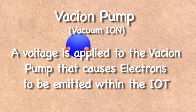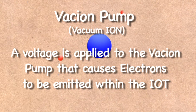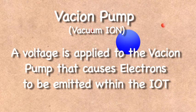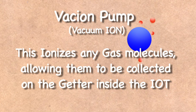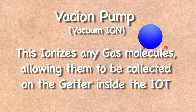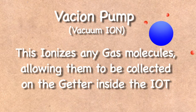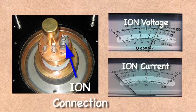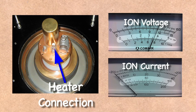Another aspect of IoTs is maintaining their internal vacuum and preventing the buildup of any gases within. To do this, an ion pump is used. A voltage is applied to the ion pump that ionizes any gas molecules which are then attracted to a getter within the tube. A typical ion voltage is 3.7 kilovolts with zero current draw. Any current drawn by the ion pump indicates the presence of gas within the tube. This can lead to arcing.